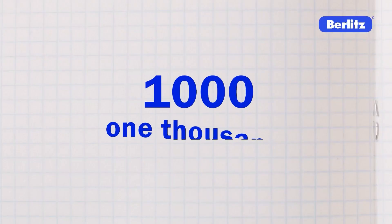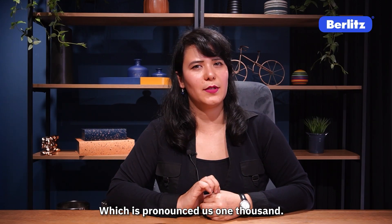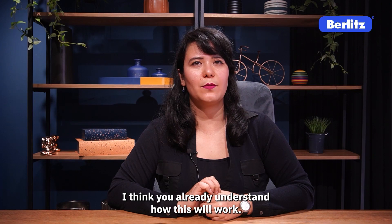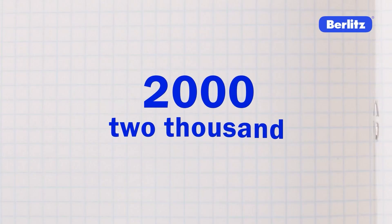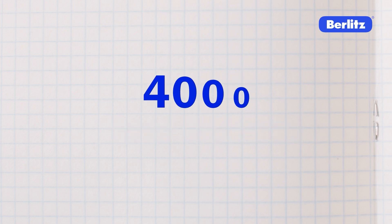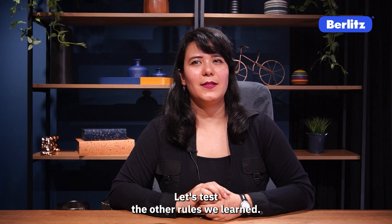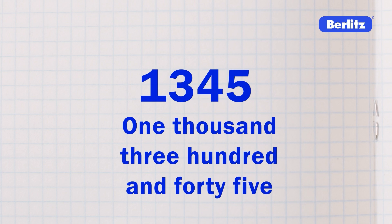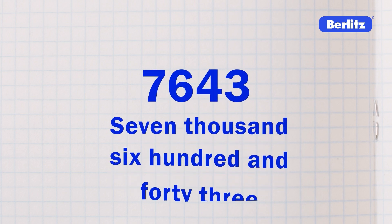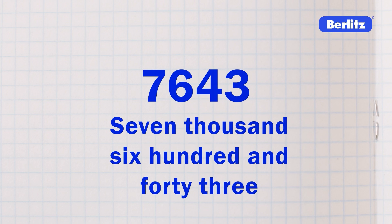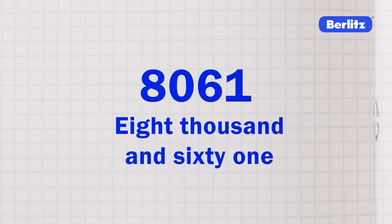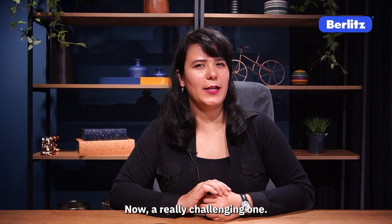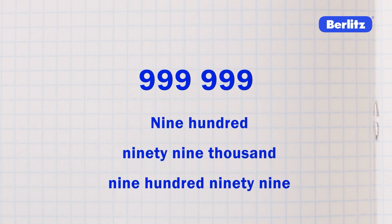After the hundreds, we have one thousand, which is pronounced as 'one thousand.' I think you already understand how this will work, right? Two thousand, three thousand, four thousand, and so on. Let's test the other rules we learned. How would you say these numbers? One thousand three hundred and forty-five. Seven thousand six hundred and forty-three. Eight thousand and sixty-one. Now a really challenging one: nine hundred and ninety-nine thousand, nine hundred and ninety-nine.